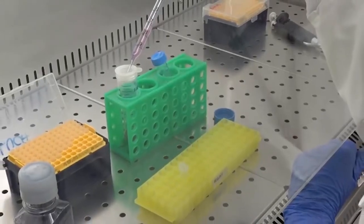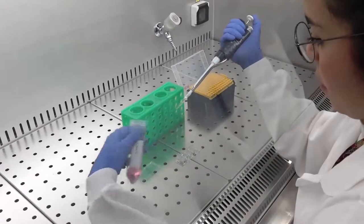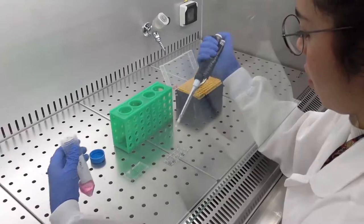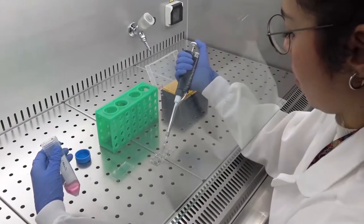To obtain mouse hippocampal primary neurons, isolate hippocampi from P1 to P4 pups. Plate cells at 70,000 cells per well in a volume of 200 microliters per well.